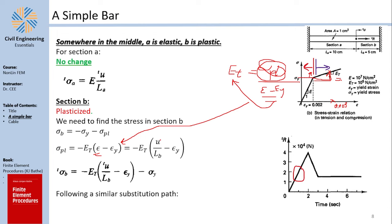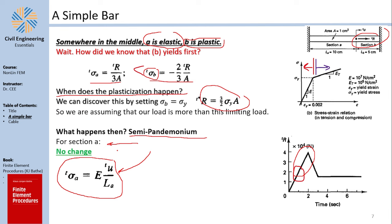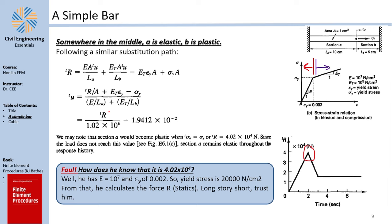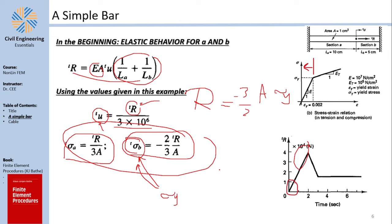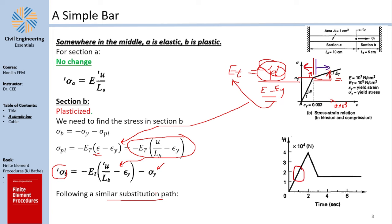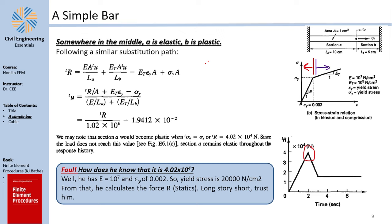Since strain equals U over L, you can rewrite sigma_B in terms of U. This means sigma_B equals this expression plus sigma_yield. Following the simple substitution steps — which would take about 20 minutes — you can derive UT as a function of RT, giving a second governing equation. So now you have two equations: one for the elastic domain and one for the semi-elastic domain where A is elastic and B is plastic.